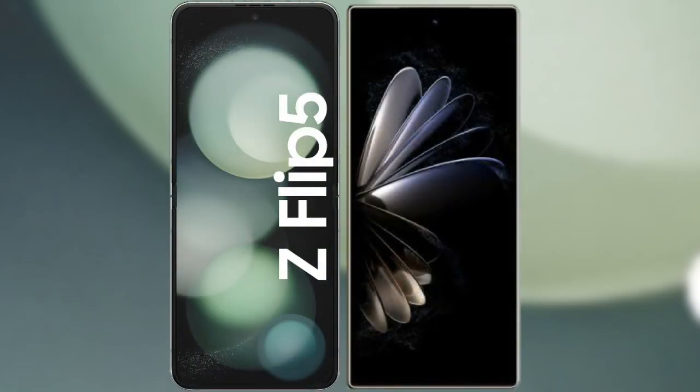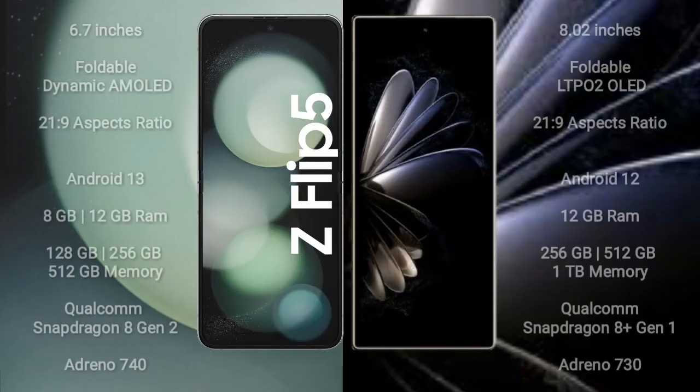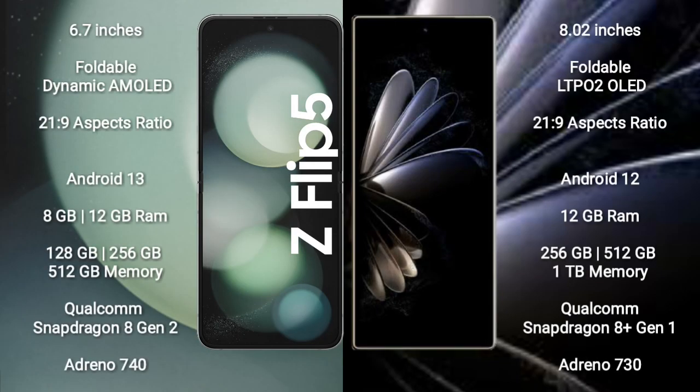I will compare the new Samsung Galaxy Z Flip 5 with Xiaomi Mix Fold 2. Samsung Galaxy Z Flip 5 comes with a 6.7-inch foldable dynamic AMOLED display with an aspect ratio of 21.9. Xiaomi Mix Fold 2 comes with an 8-inch foldable LTPO4 OLED display and aspect ratio 21.9.